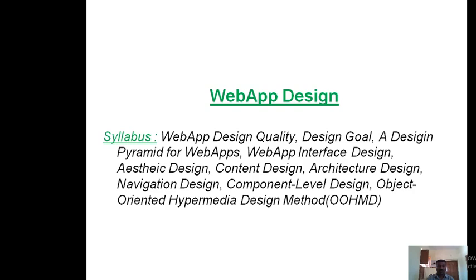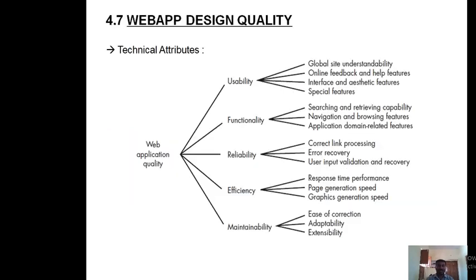The first concept is Web App Design Quality. Quality is broadly classified into two categories: Technical Attributes and Quality Attributes. In Technical Attributes, we have five attributes for Web App qualities. The first is Usability, second is Functionality, third is Reliability, fourth is Efficiency, and the last one is Maintainability.